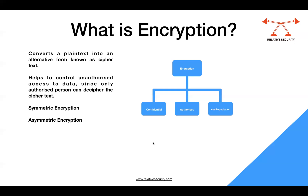In asymmetric encryption, it's not a single key — there are two keys: a private key and a public key. Both keys are used: the private key is used to encrypt the data and the public key is used to decipher the encrypted data. That covers the encryption topic, and you should be able to answer related questions easily.